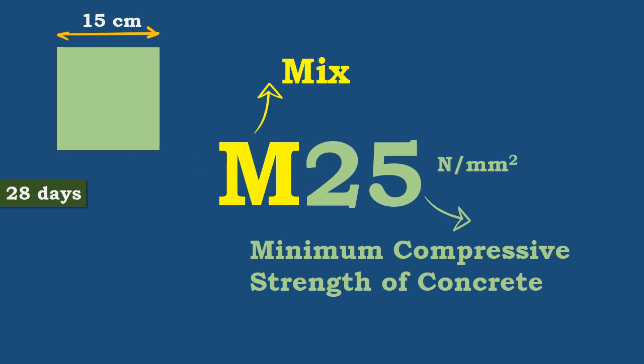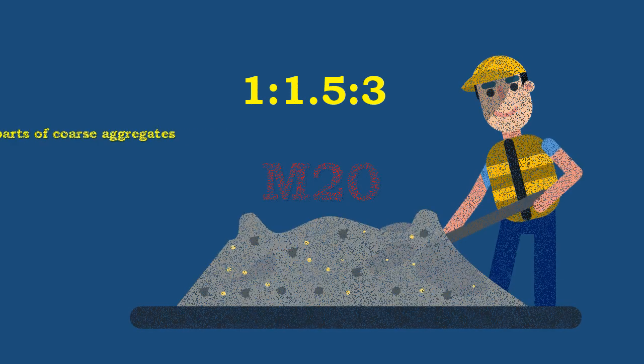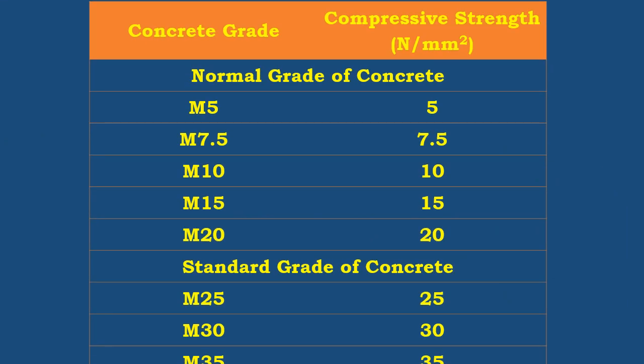These grades also represent various mix ratios of cement to fine aggregates to coarse aggregates. For example, M20 concrete represents a mix ratio of 1:1.5:3 — that is, for every one part of cement, 1.5 parts of sand, and three parts of coarse aggregates are mixed, as per Indian standard code.